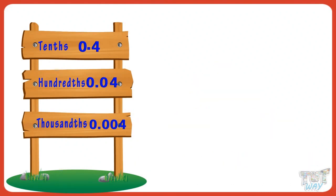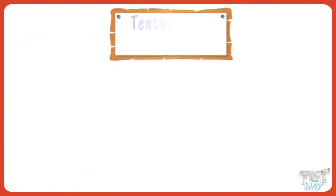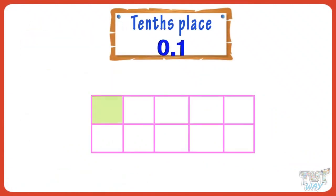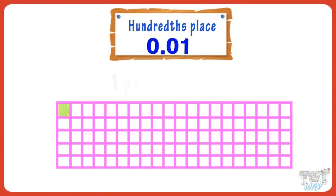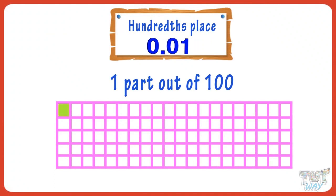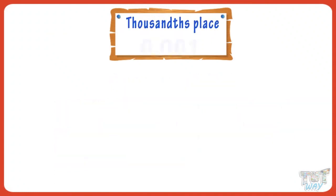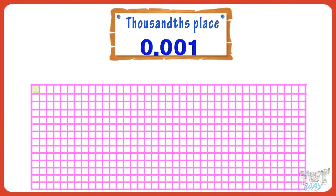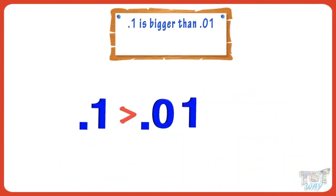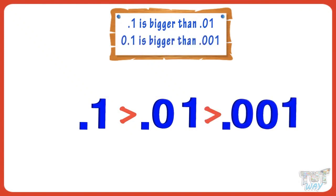So, the farther the digit is from the decimal point, the smaller the fraction it represents. Tenths place means one part out of ten. Hundredths place means one part out of one hundred. And thousandths place means one part out of one thousand. So, 0.1 is bigger than 0.01, and 0.01 is bigger than 0.001.